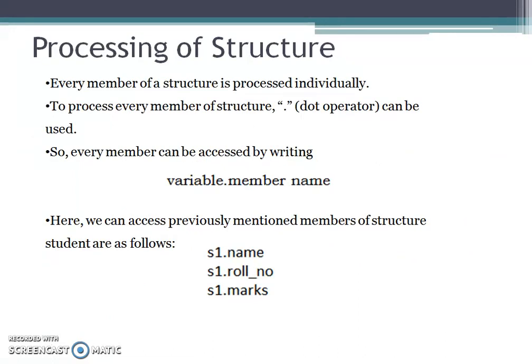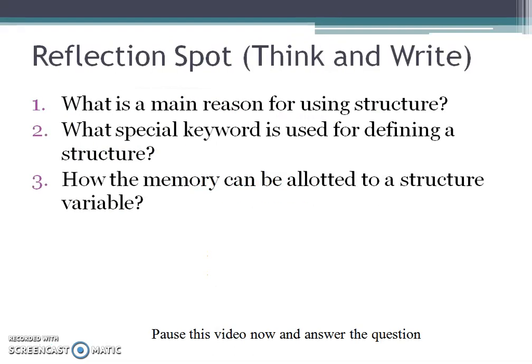Now let's go to processing of structure. Every member of a structure is processed individually using the dot operator. The correct syntax is: variable name, dot operator, then member name. For example, S1.name for the student's name, S1.rollnumber for the roll number, and S1.marks for the marks. Here, name, roll number, and marks are the members of the structure.